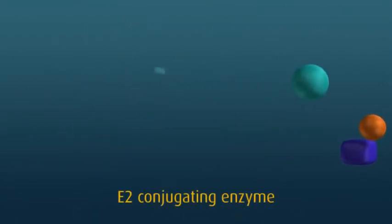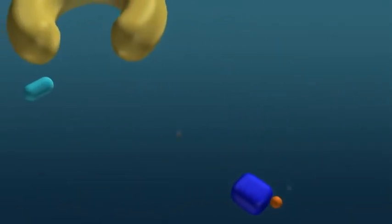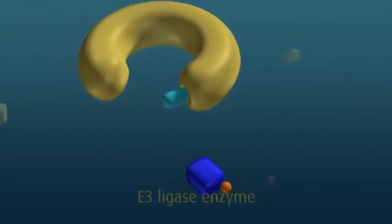The activated ubiquitin is then transferred from the E1 onto a second enzyme called an E2 ubiquitin conjugating enzyme. This enzyme acts as an escort for ubiquitin to its next destination, the E3 ligase enzyme.